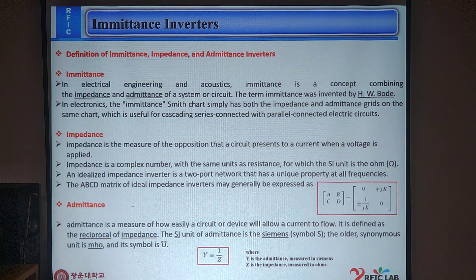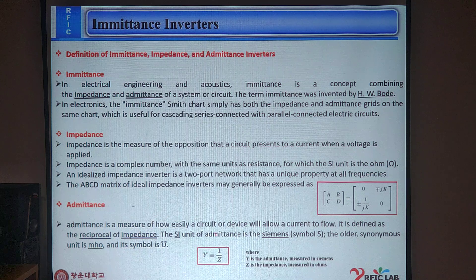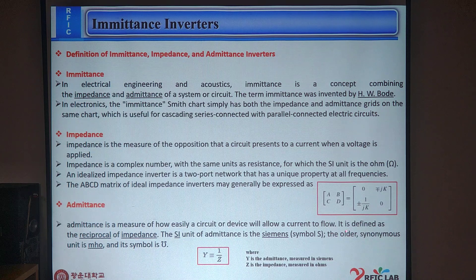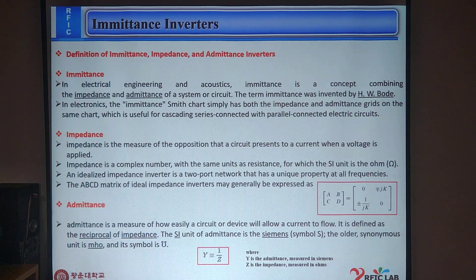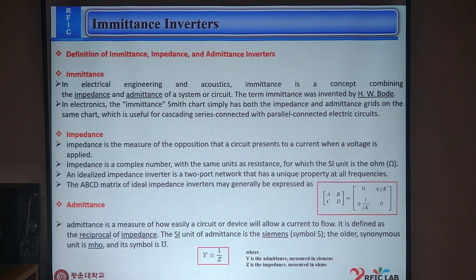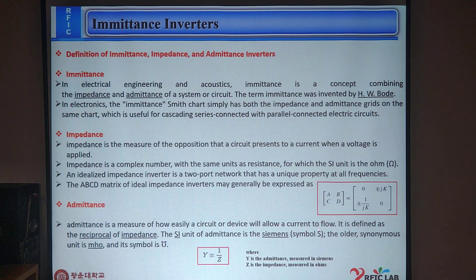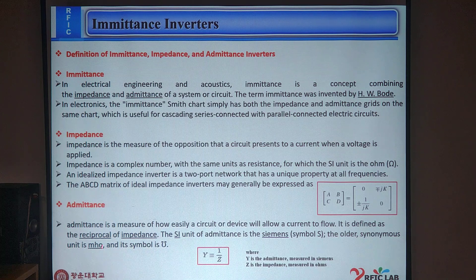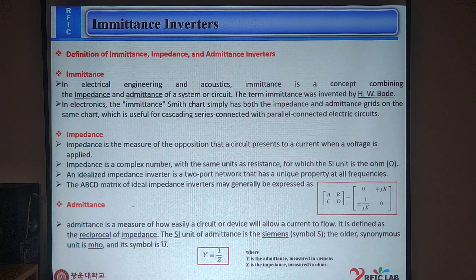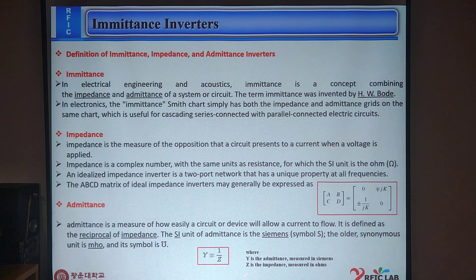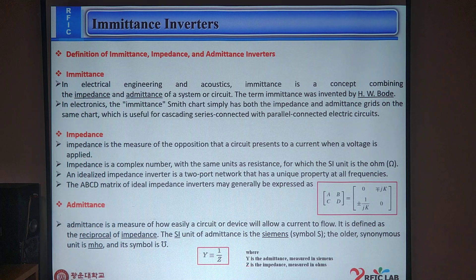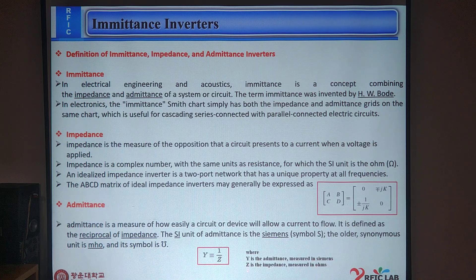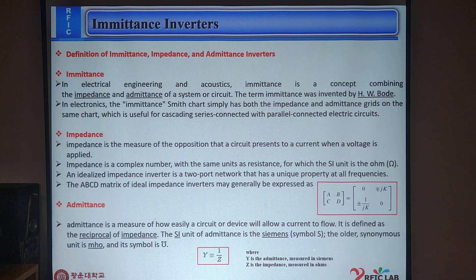Admittance. Admittance is a measure of how easily a circuit or device will allow a current to flow. It is defined as the reciprocal of impedance. The SI unit of admittance is Siemens, symbol is S. The older synonymous unit is Mho, and its symbol is opposite to the Ohm. Admittance is represented by the formula Y = 1/Z, where Y is the admittance measured in Siemens and Z is the impedance measured in Ohm.